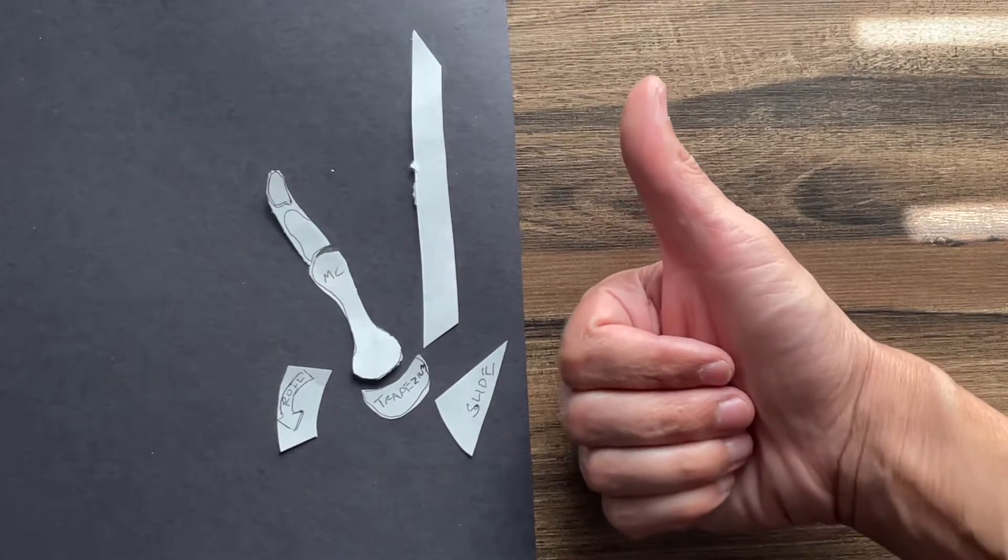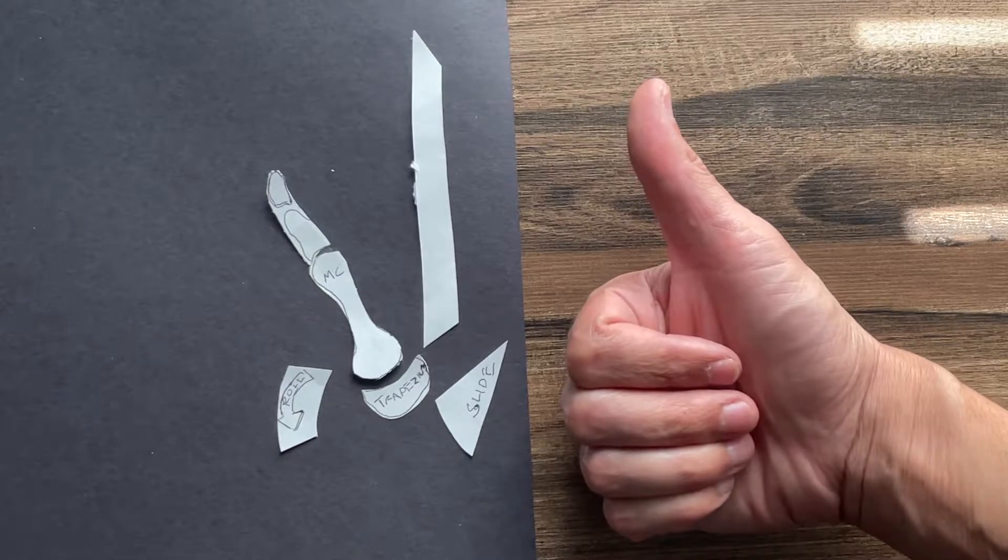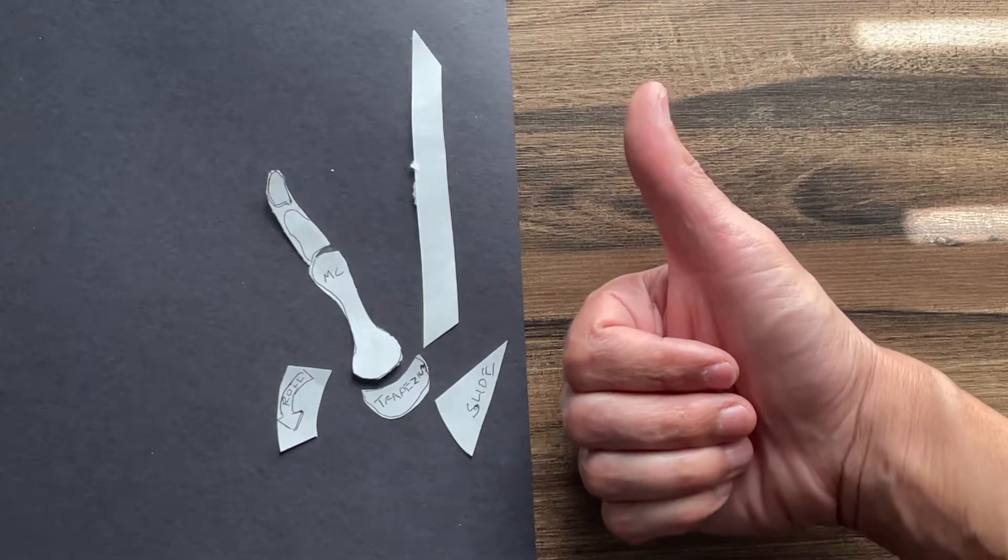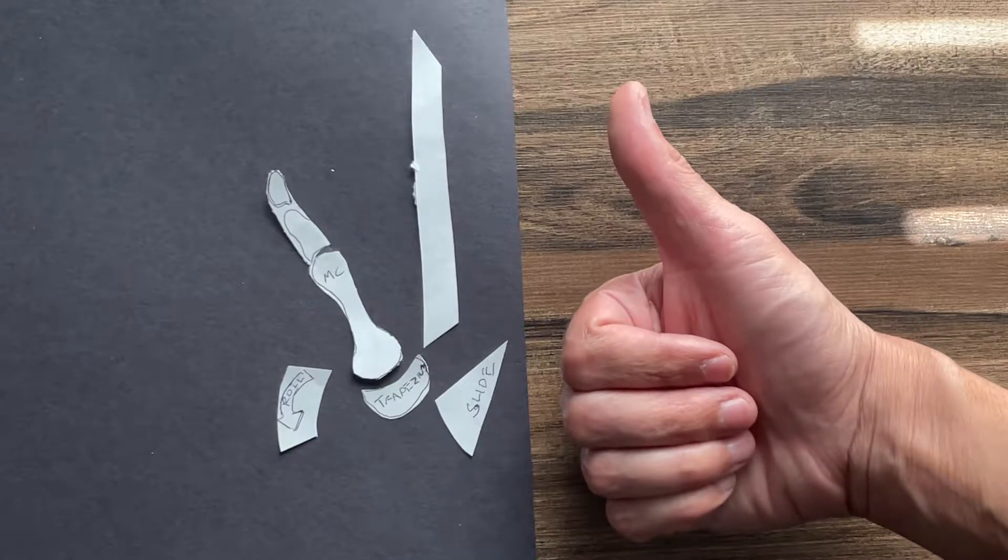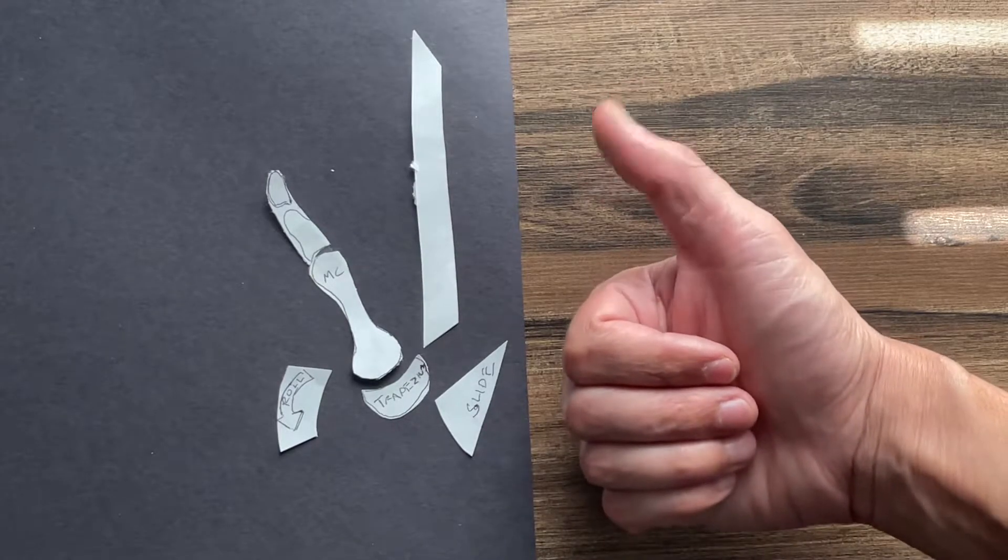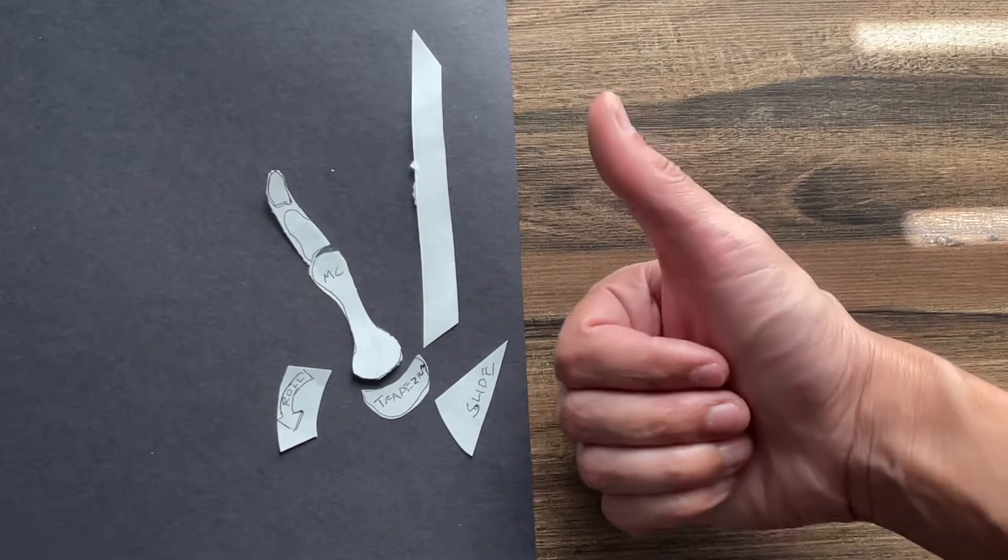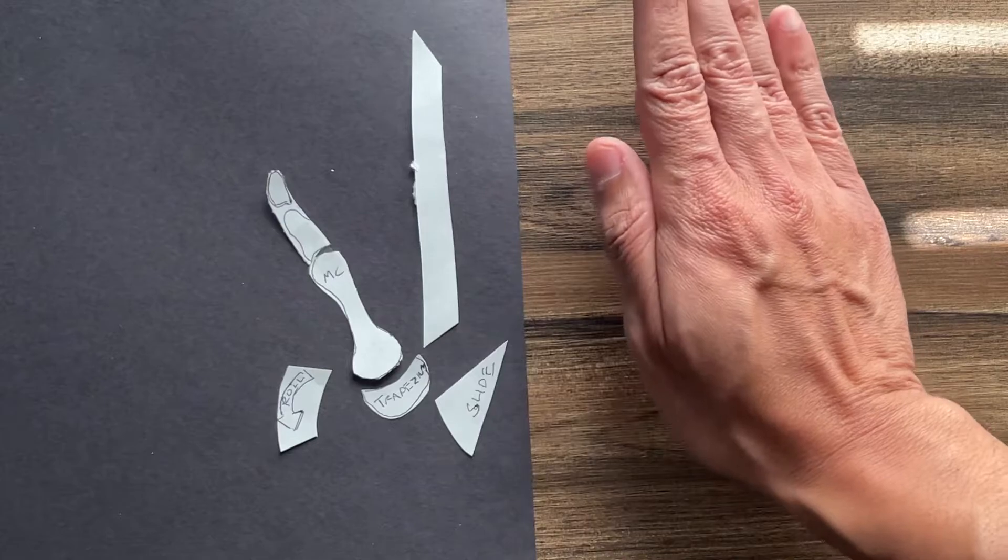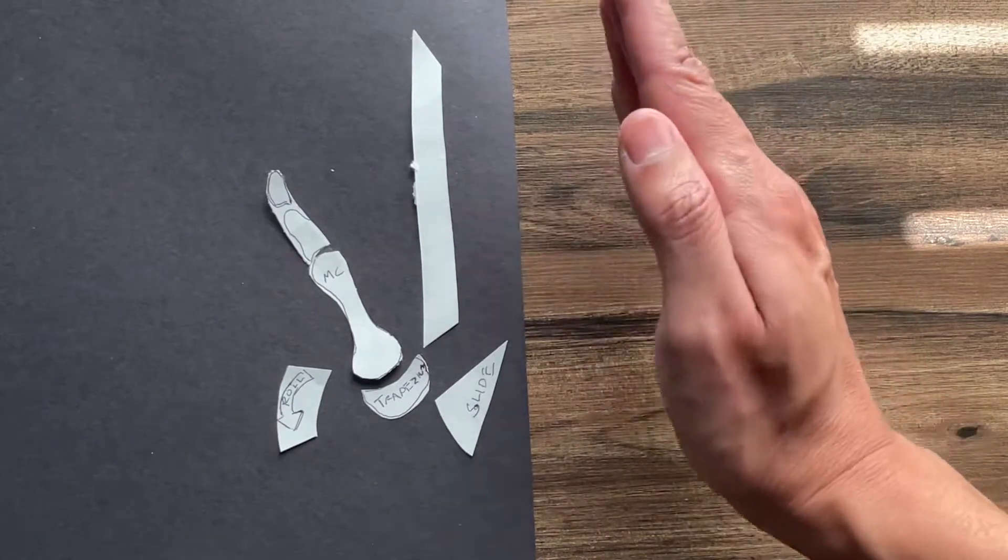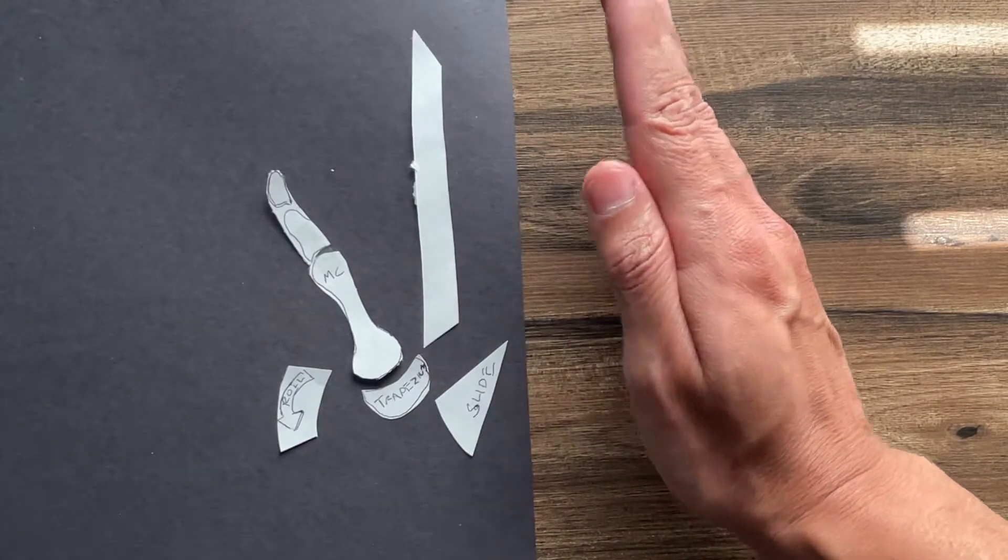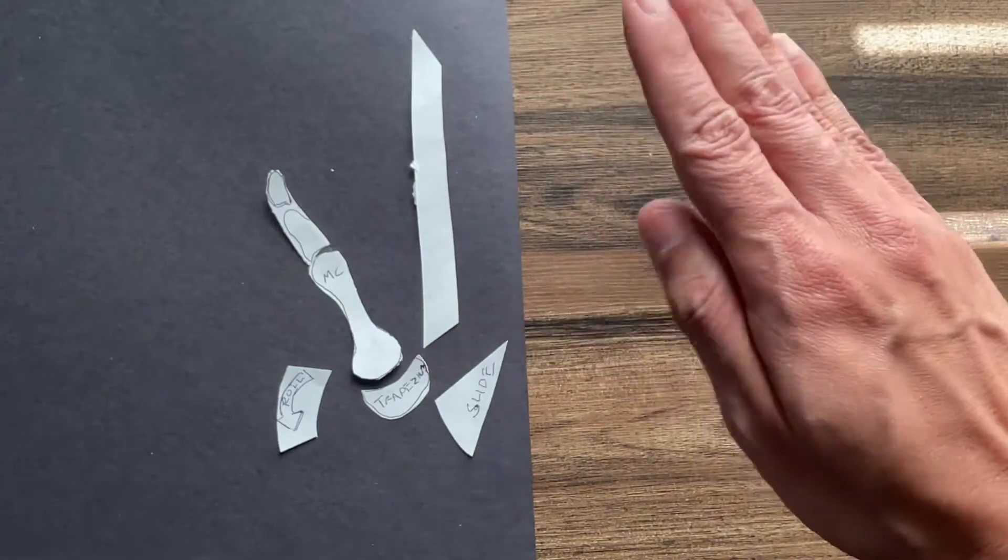I want to make this quick video to talk about the arthrokinematics of the thumb because it can be a little confusing, especially with the concave and convex relationship. Because it is a saddle joint, it can change depending on if it's flexing or extending or abducting and adducting. I want to give the rules of the concave and convexity depending on which direction the thumb is going.